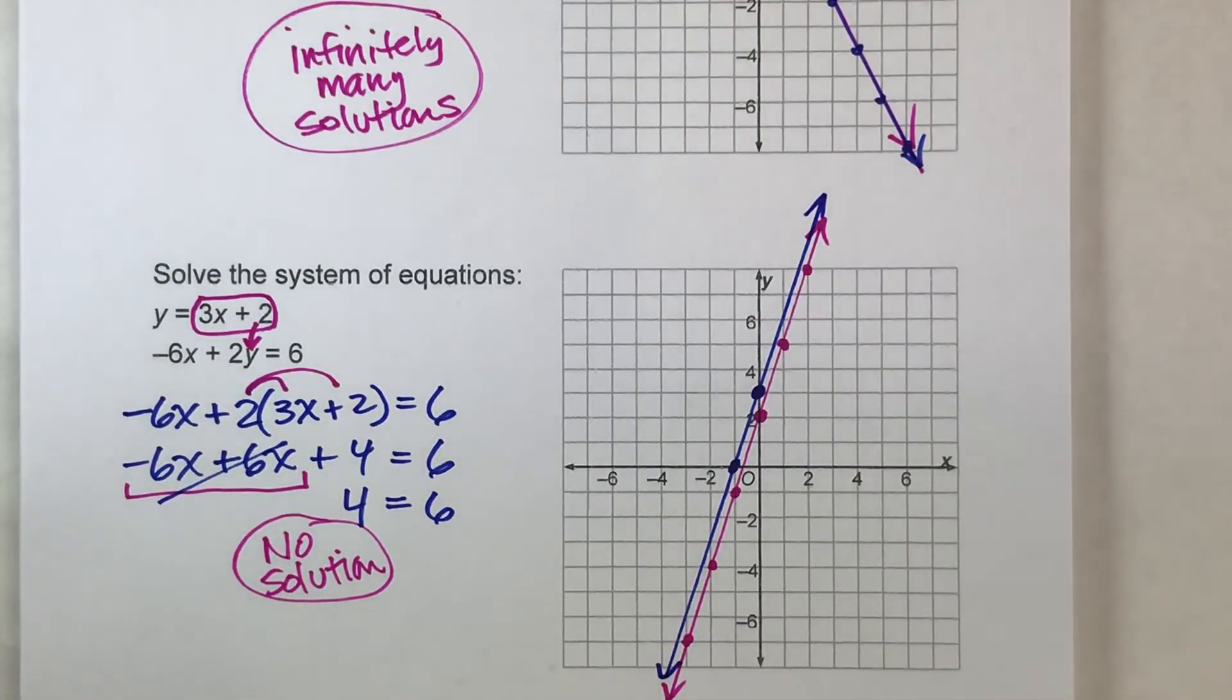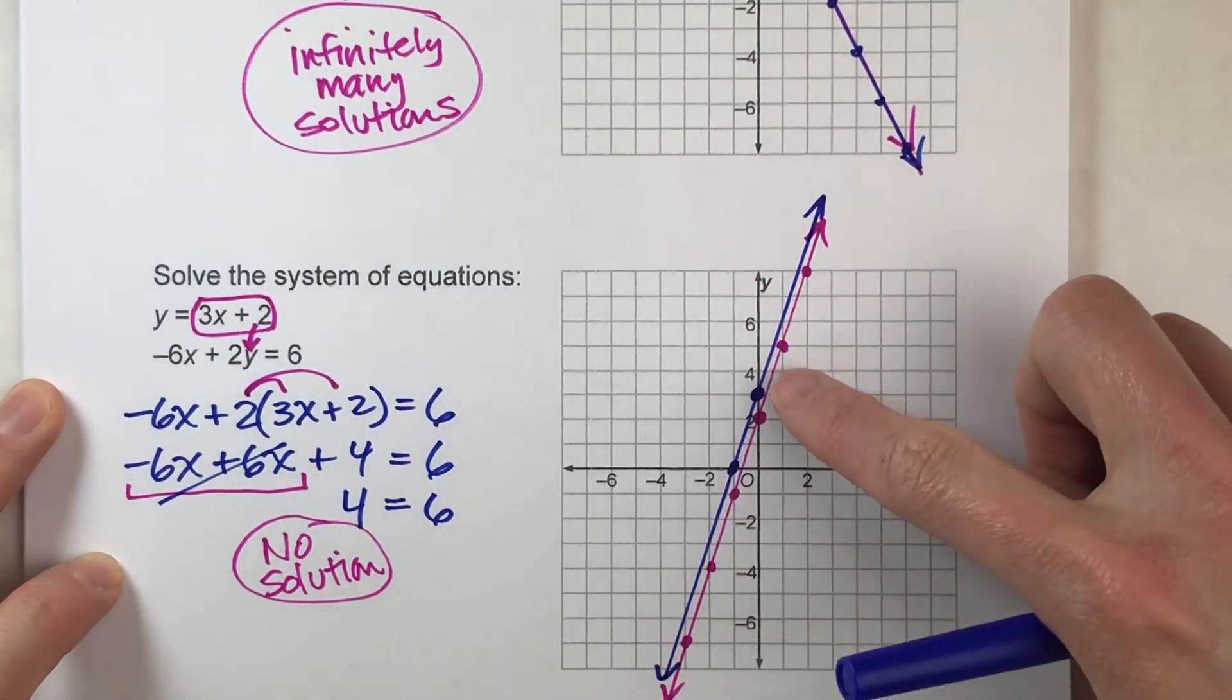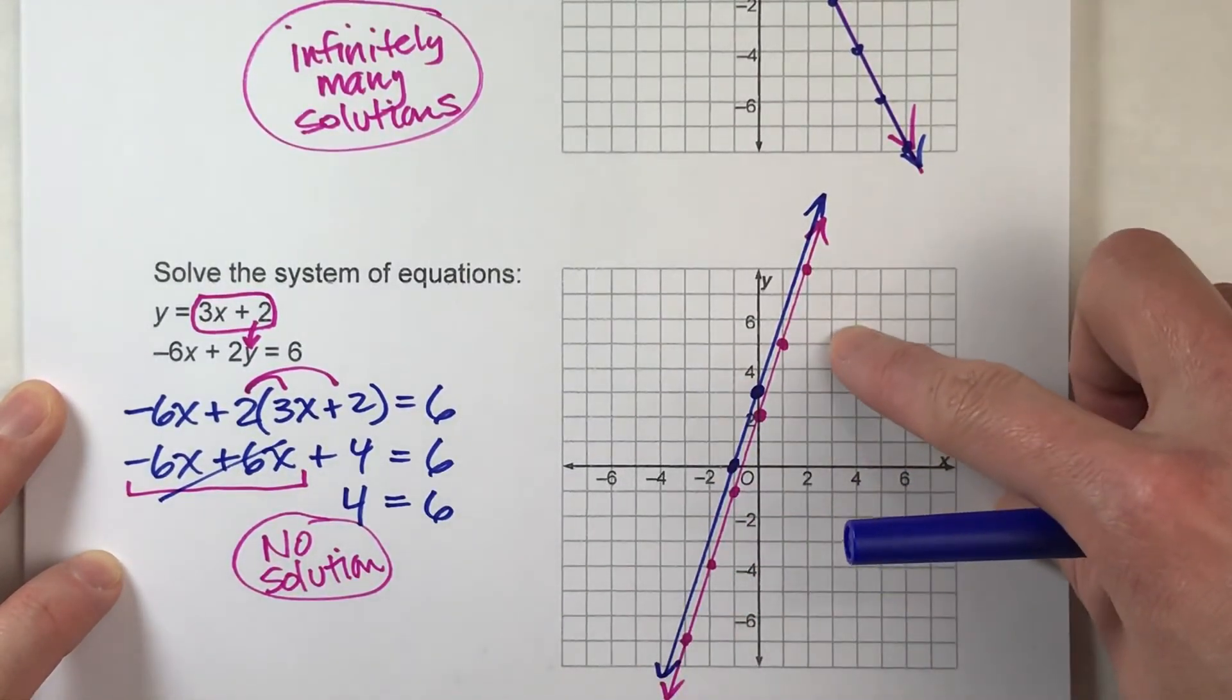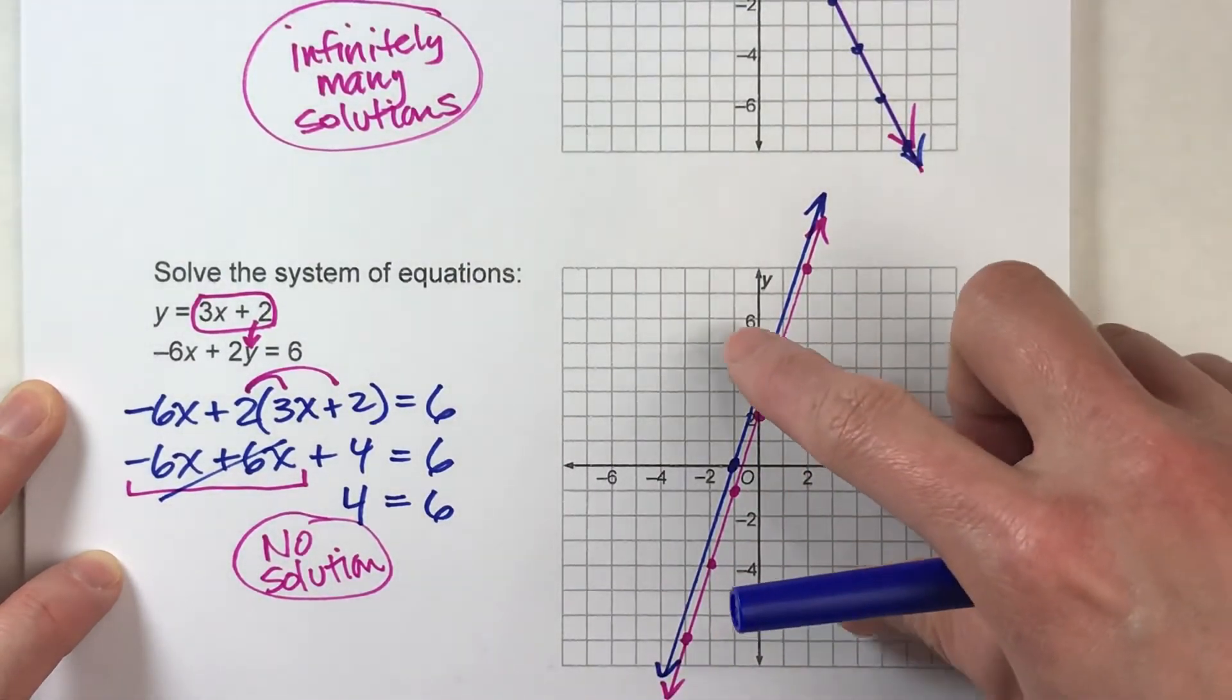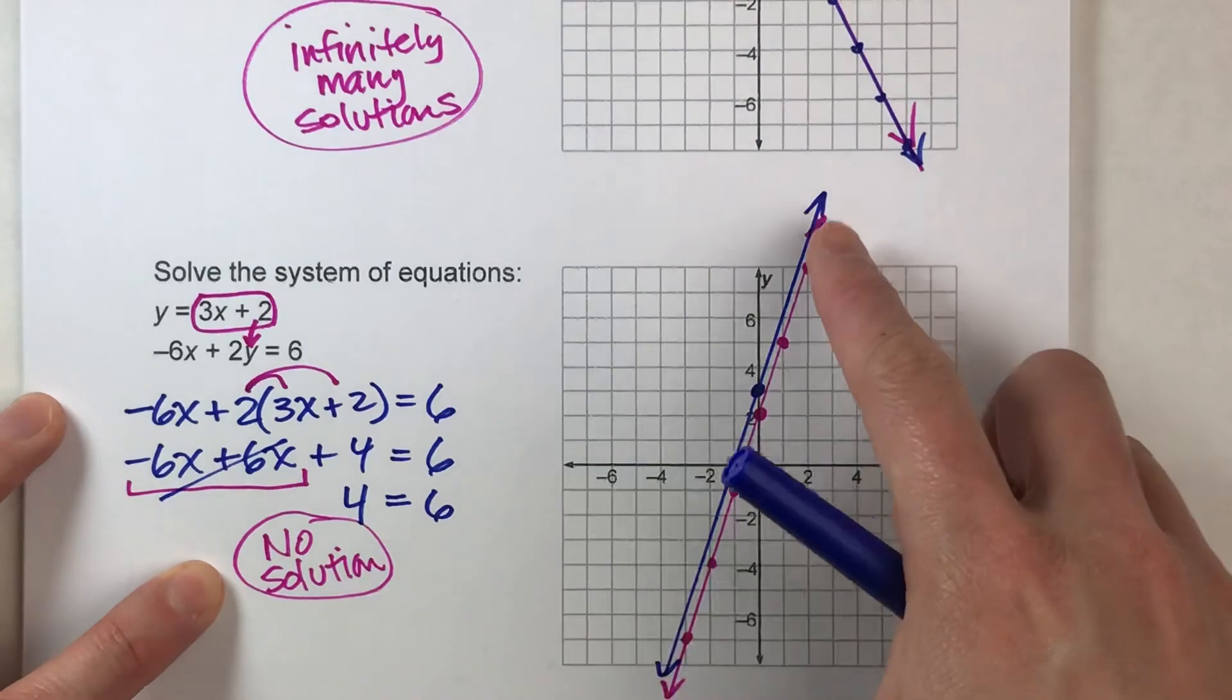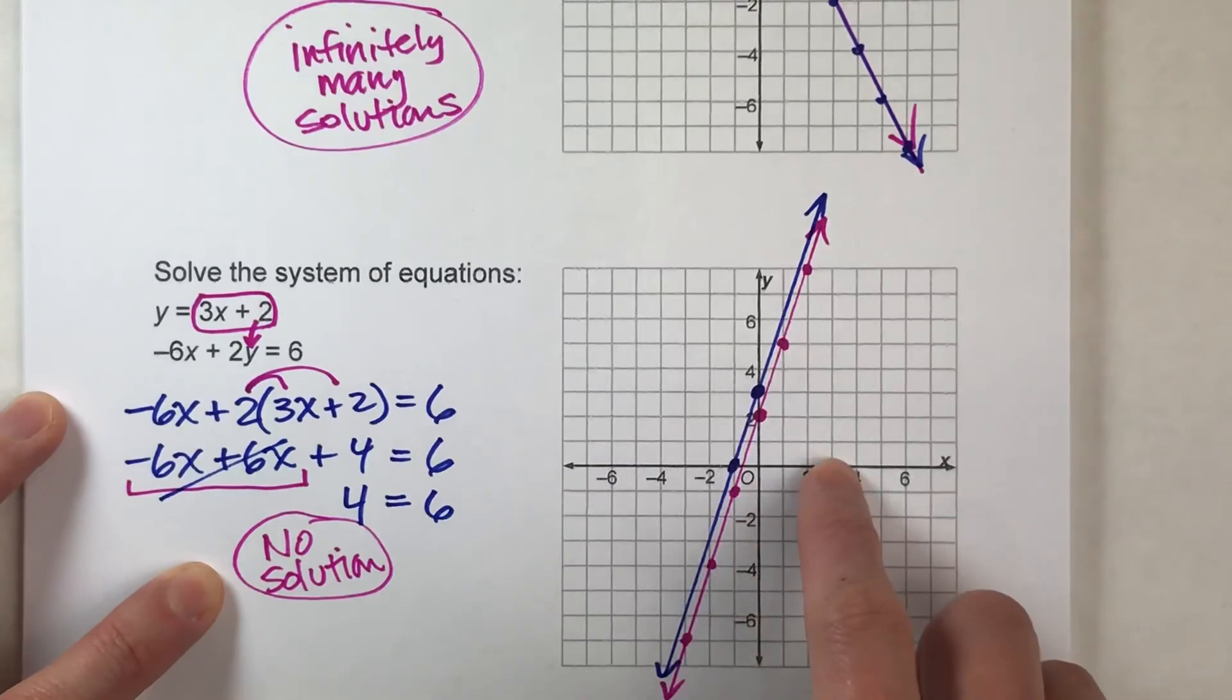Now notice something here. The solution to a system of equations is the point of intersection. Look at these two lines. They're very close to each other, but notice they run parallel to each other. These two lines will never intersect. Since they'll never intersect, there's no solution, which is exactly what we got over here. So two lines that run parallel and never intersect have no solution. That's what that looks like on a graph.